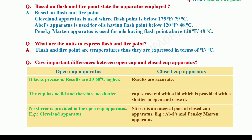Based on the Flash Point, which type of apparatus should be employed? If the Flash Point is below 79 degrees centigrade or 175 degrees Fahrenheit, the Cleveland apparatus is used. If the Flash Point is below 48 degrees centigrade or 120 degrees Fahrenheit, Abel's apparatus can be employed. If the Flash Point of the test sample is above 48 degrees centigrade, Pensky-Martin apparatus should be used.